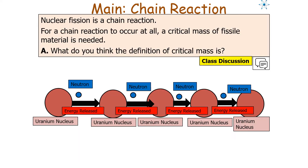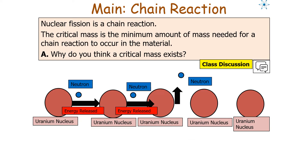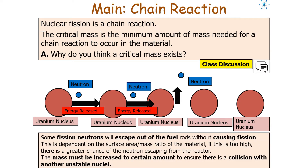Nuclear fission is a chain reaction. For a chain reaction to occur at all, a critical mass of fissile material is needed. Critical mass is the minimum amount of mass needed for a sustained chain reaction to occur in a material. The chain reaction takes place because neutrons released in the original fission event will go on to encounter other nuclei and cause them to fission as well. However, some fission neutrons will escape out of the fuel rods without causing fission, as they won't encounter another uranium nucleus.